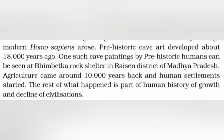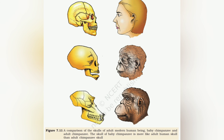Prehistoric cave art developed about 18,000 years ago — one such cave painting by prehistoric humans can be seen at Bhimbetka rock shelter in Raisen district of Madhya Pradesh. Agriculture came around 10,000 years back and human settlements started. The rest of what happened is part of human history of growth and decline of civilizations. Note that monkeys are not our ancestors — rather, humans and monkeys share a common ancestor. This was all about evolution.